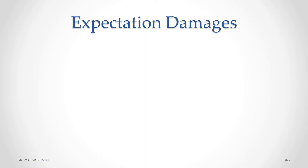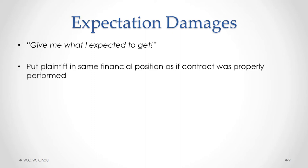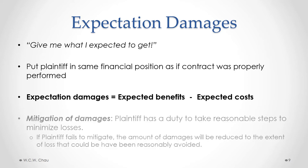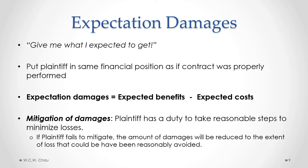Let's focus on expectation damages, which is the most common form of damages. The purpose of expectation damages is to put the plaintiff in the same position as if the contract was properly performed. The mathematical expression is: expectation damages = expected benefits from the contract minus expected costs from the contract. A key point is that a plaintiff has a duty to take reasonable steps to minimize losses. If a plaintiff fails to mitigate, a court will reduce the damages awarded to the extent that the loss could have been reasonably avoided.